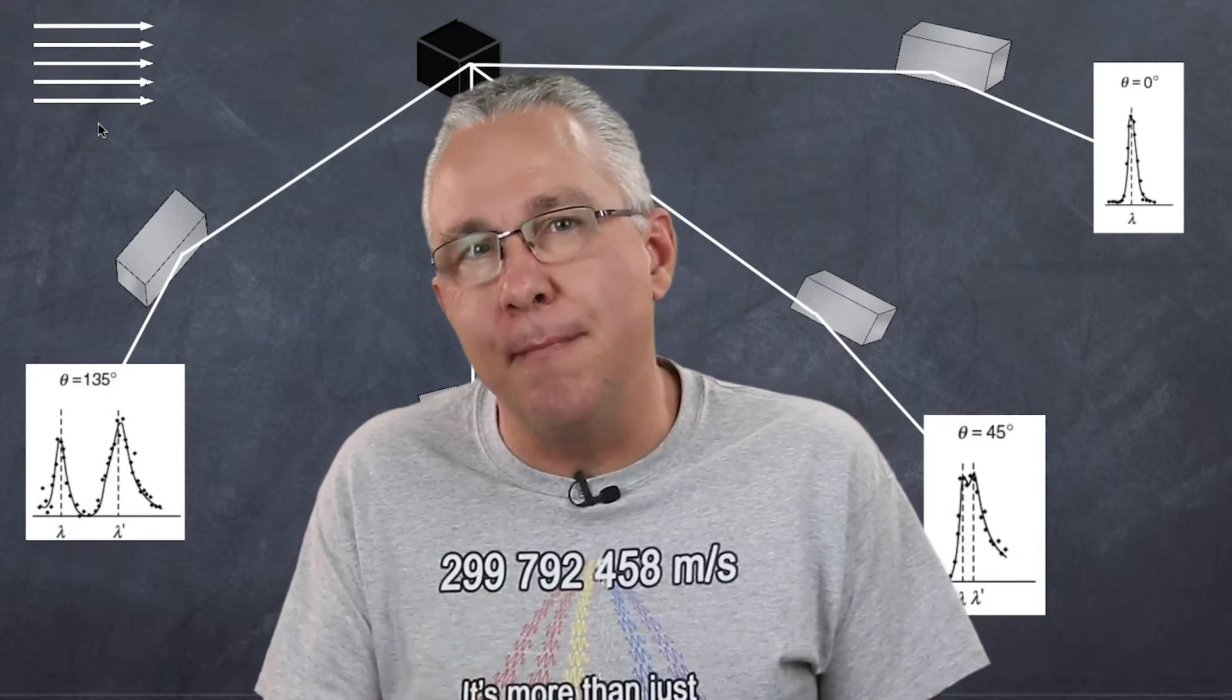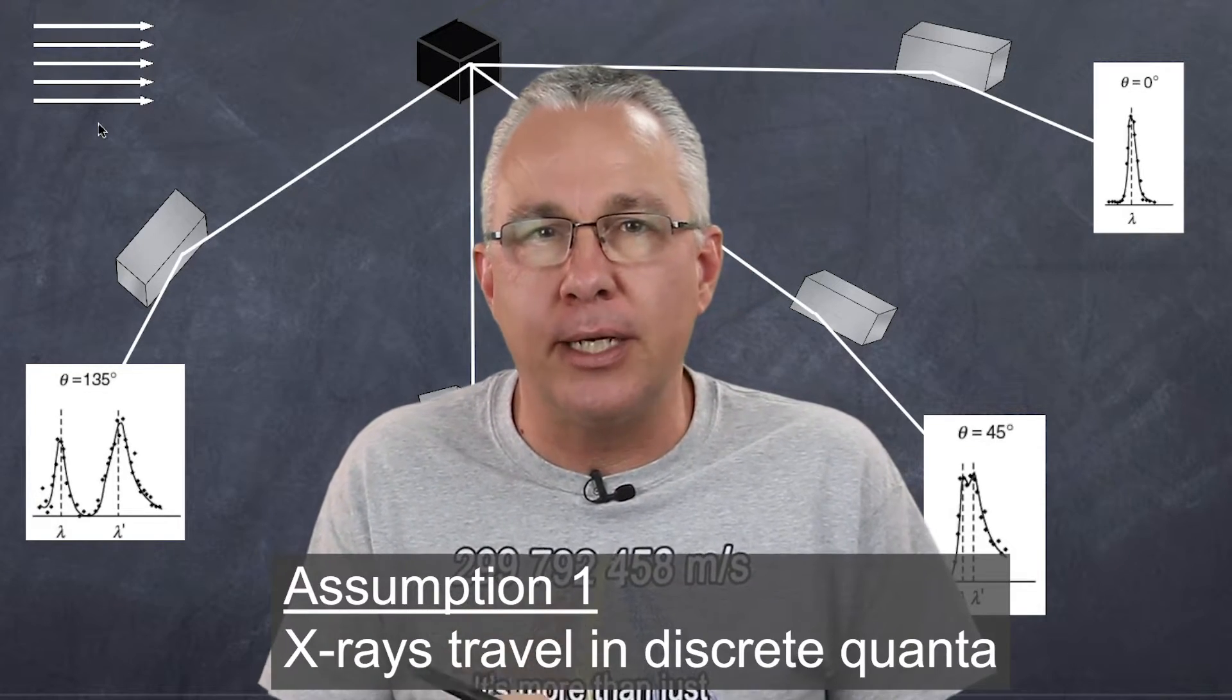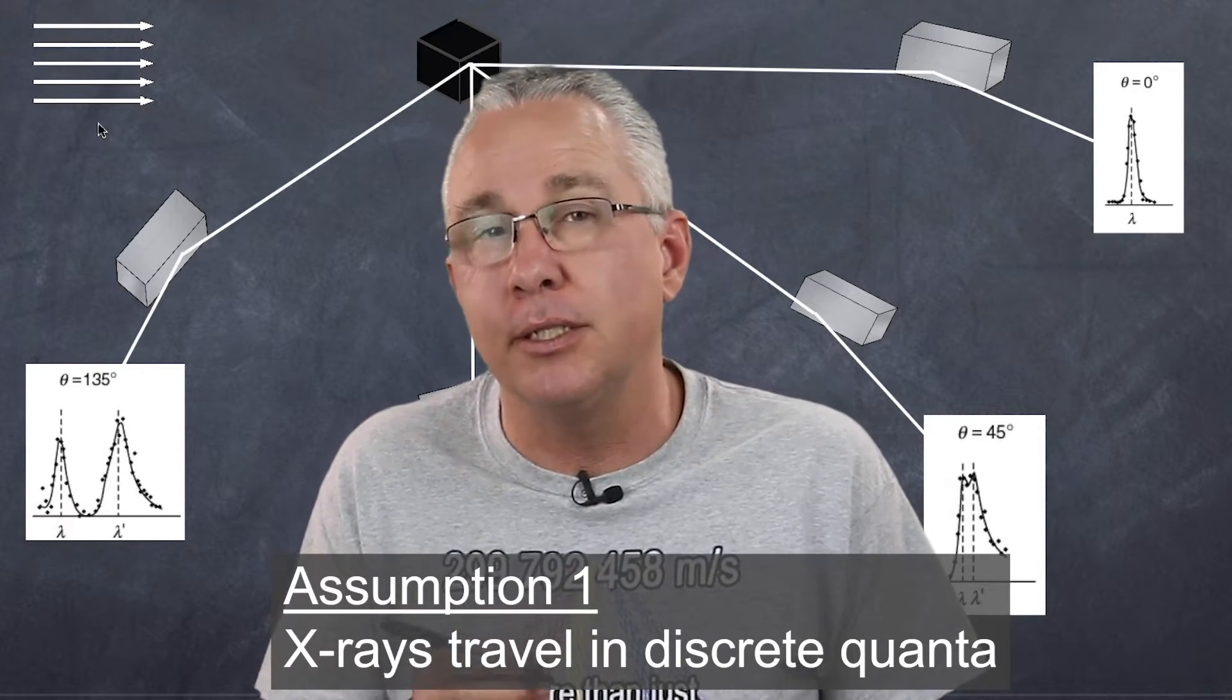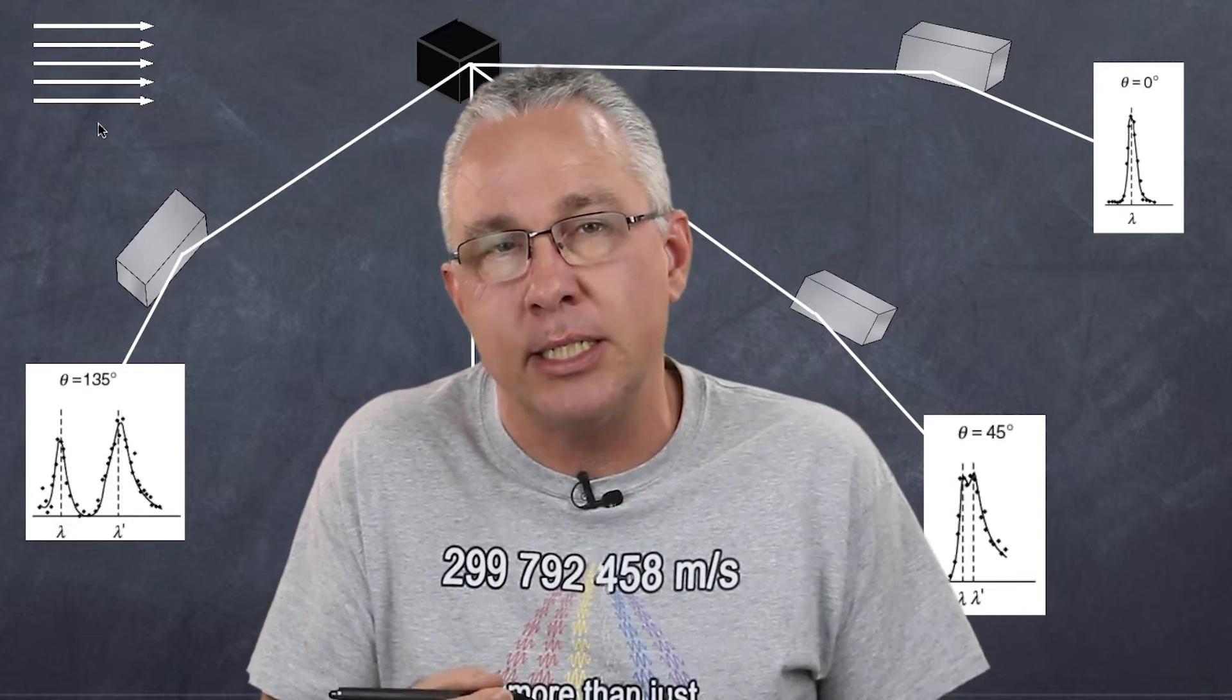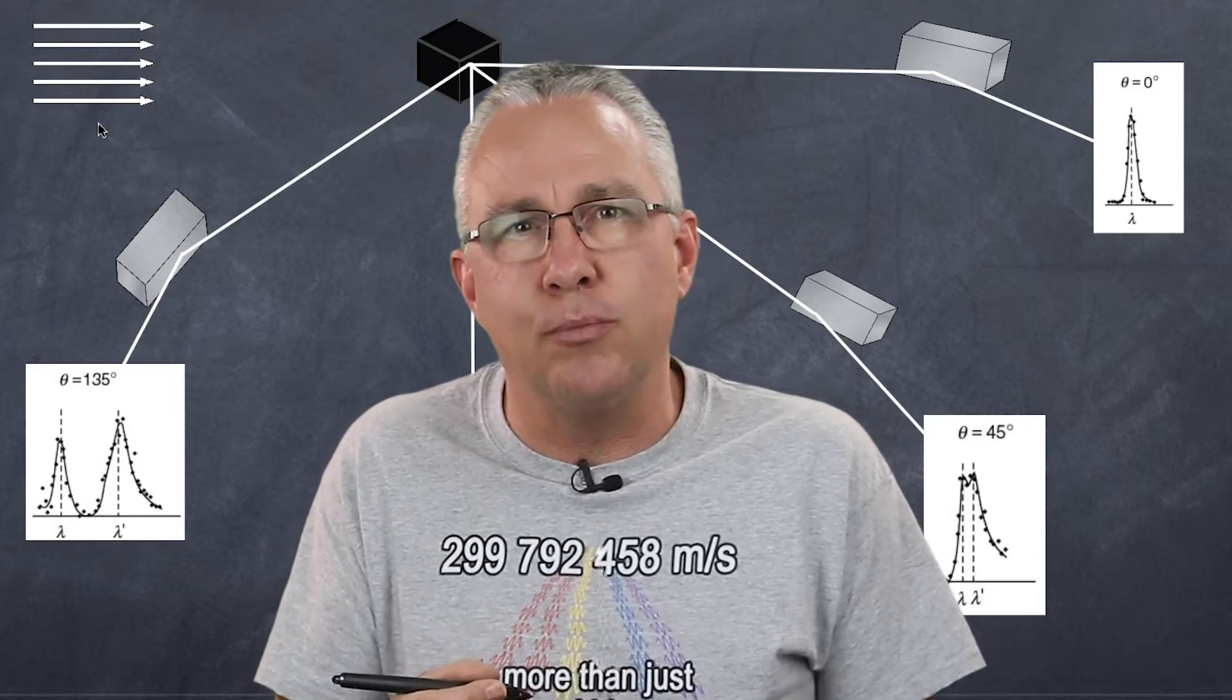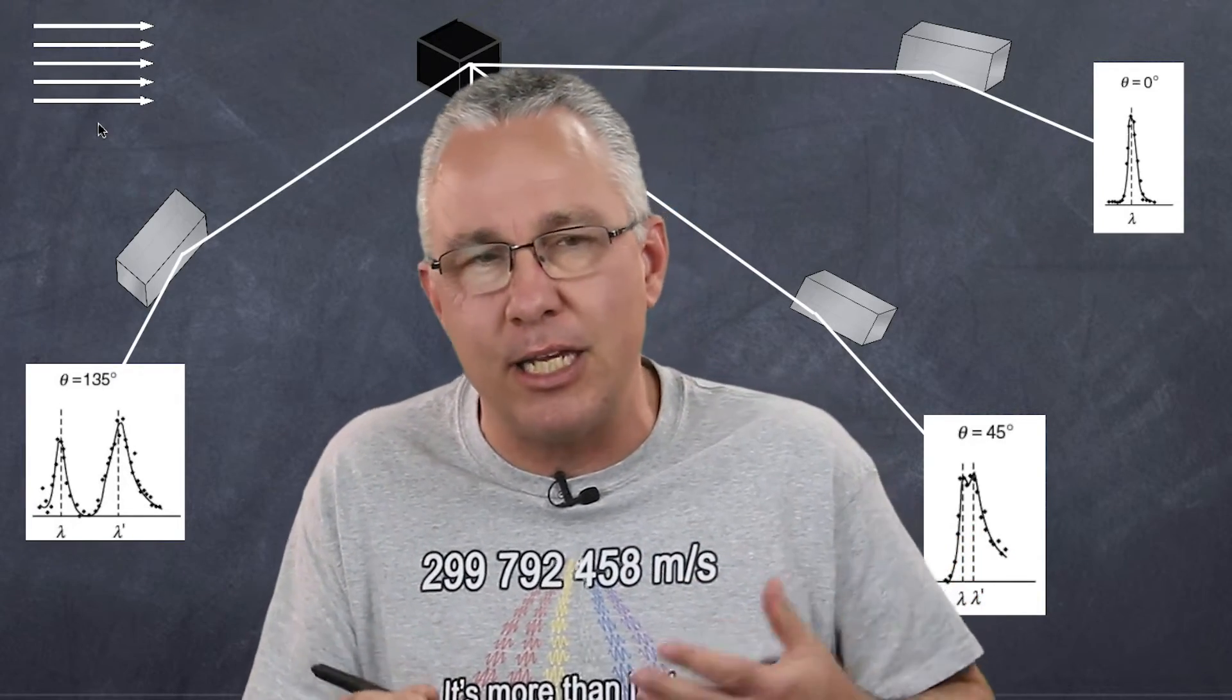Now, what Compton did was make a number of assumptions. And the first assumption he made was how about we treat our X-rays not as a wave but as a particle, just like Einstein did when talking about light. Because X-rays is a form of light, a form of electromagnetic radiation, and that too should behave in terms of quanta or discrete amounts, what we now know as photons.